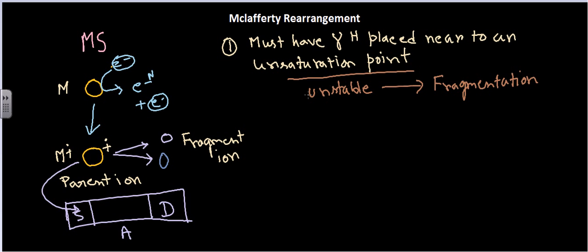This kind of McLafferty rearrangement can be seen in ketones, aldehydes, alcohols, alkenes, alkanes, and even in carboxylic acids having unsaturation. In an exam question, they will provide you a molecule and ask what kind of rearrangement fragmentation it can produce. So let's take an example and explain it.